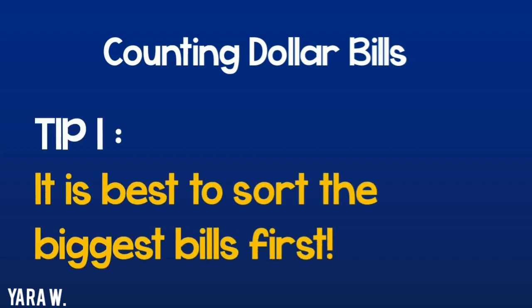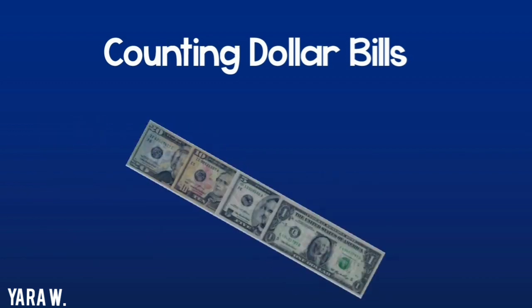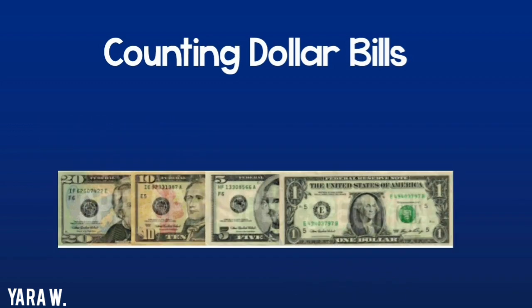It is best to sort the biggest bills first. This means that if I have a 20, a 10, a 5, and a 1, I will put the 20 first, then the 10, then the 5, then the 1.